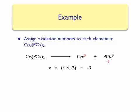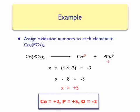Taking the product of four and minus two gives minus eight, so X − 8 = −3, meaning X = +5. Therefore, the oxidation number for phosphorus in cobalt(II) phosphate is plus five. To summarize: cobalt has an oxidation number of plus two, phosphorus has an oxidation number of plus five, and oxygen has an oxidation number of minus two.